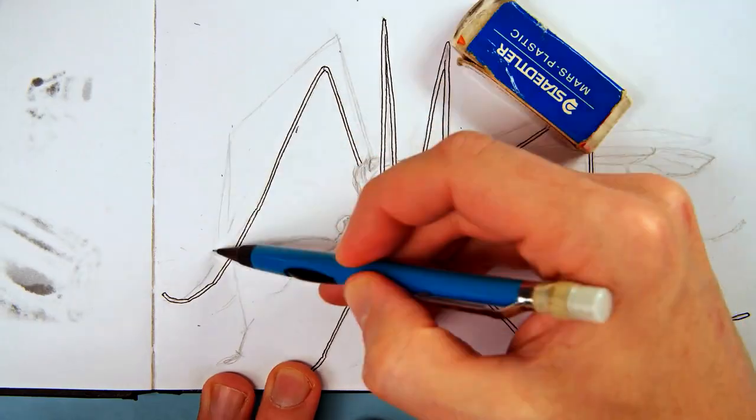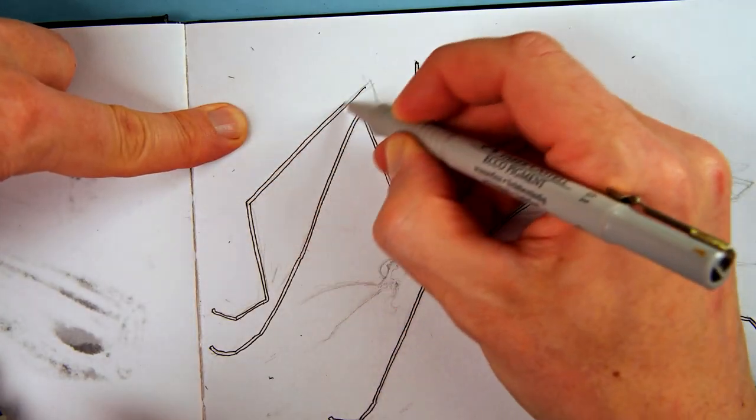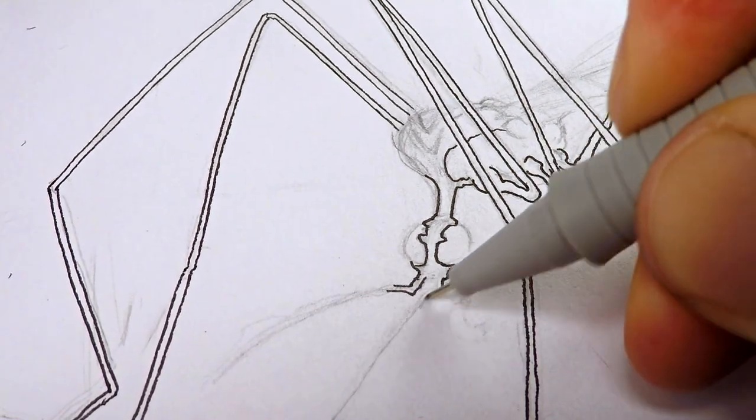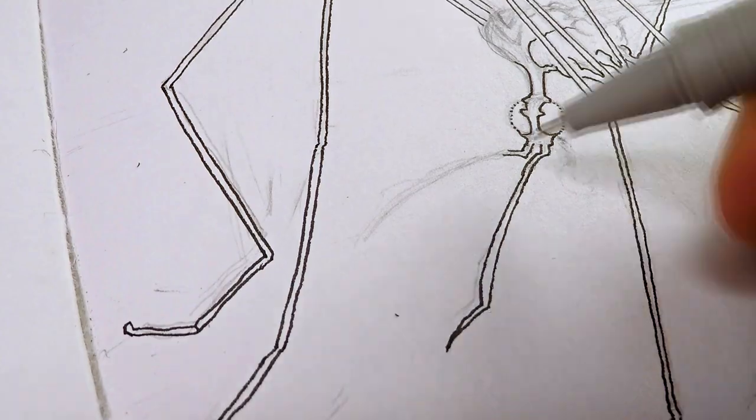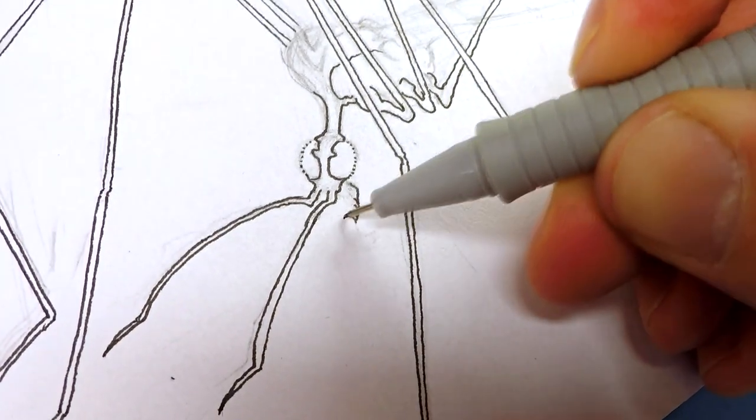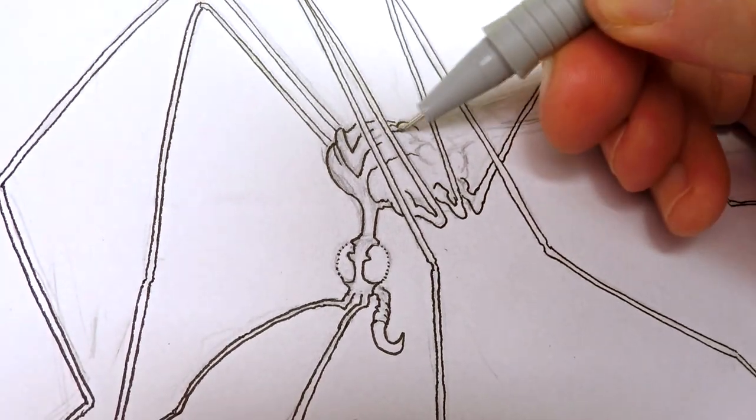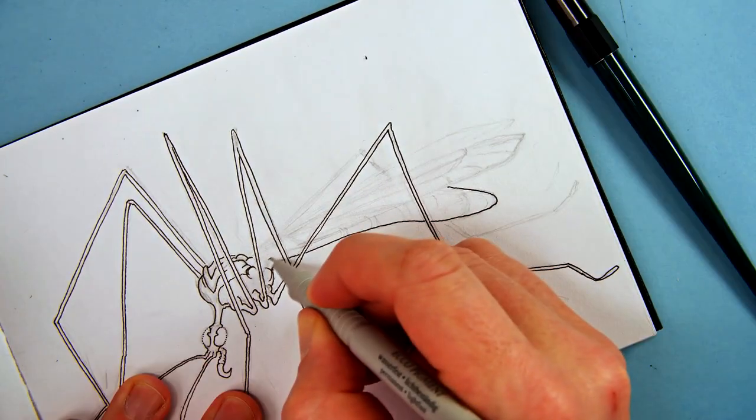The grey pen is a Faber-Castell Eco pigment which doesn't mean so much but I just picked it up because it was 0.1. So it's maybe a little bit finer lines than the sailor fountain pen. So I used it to pick out some extra detail.